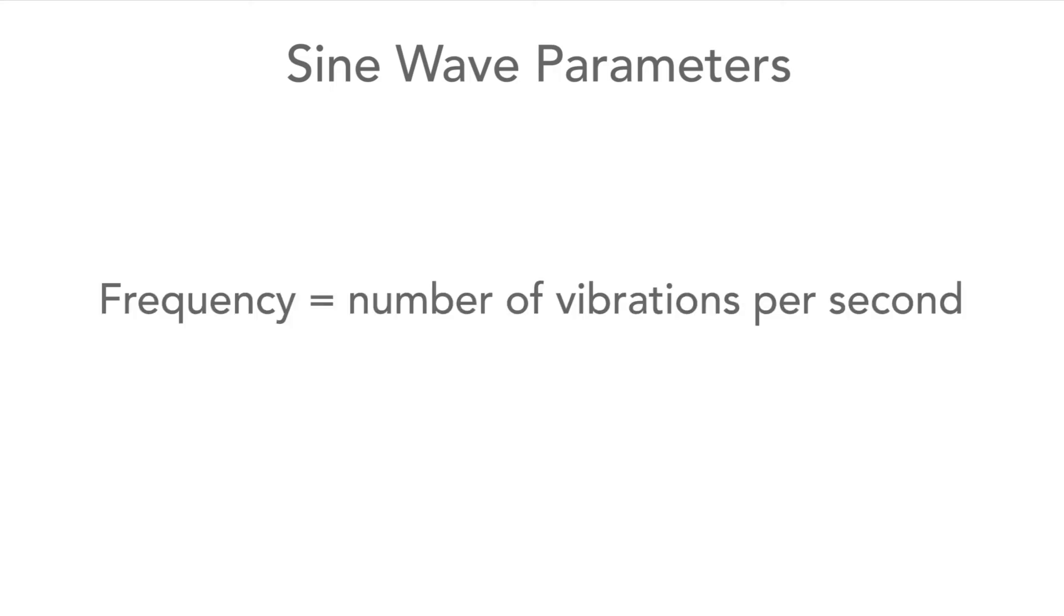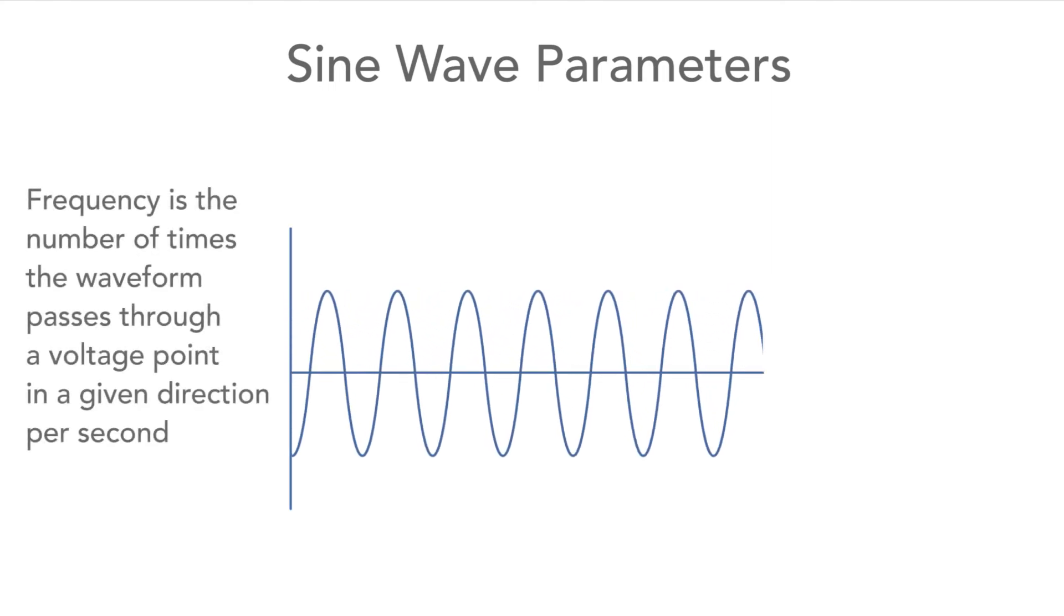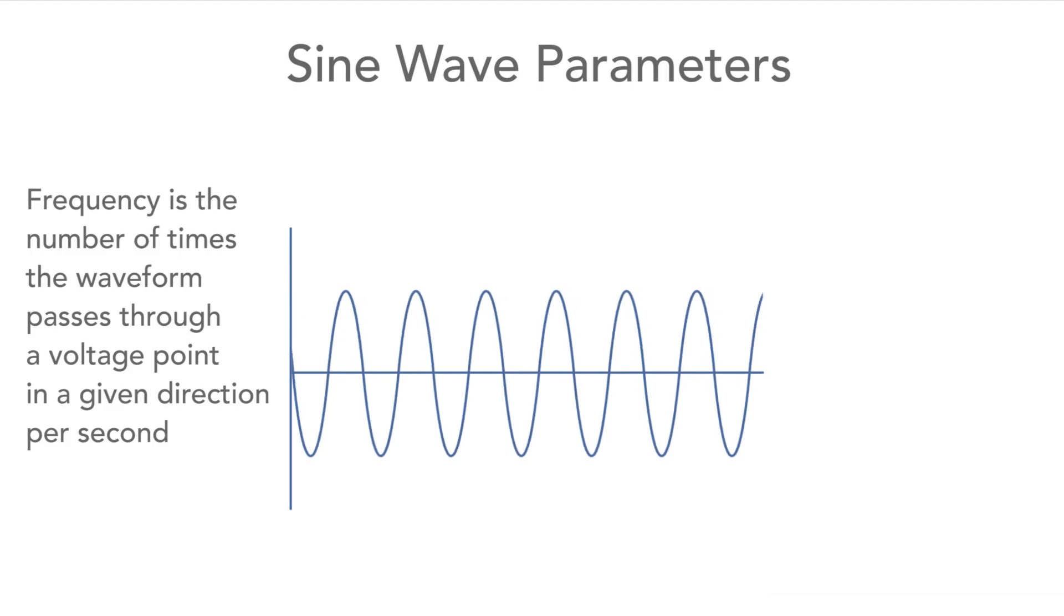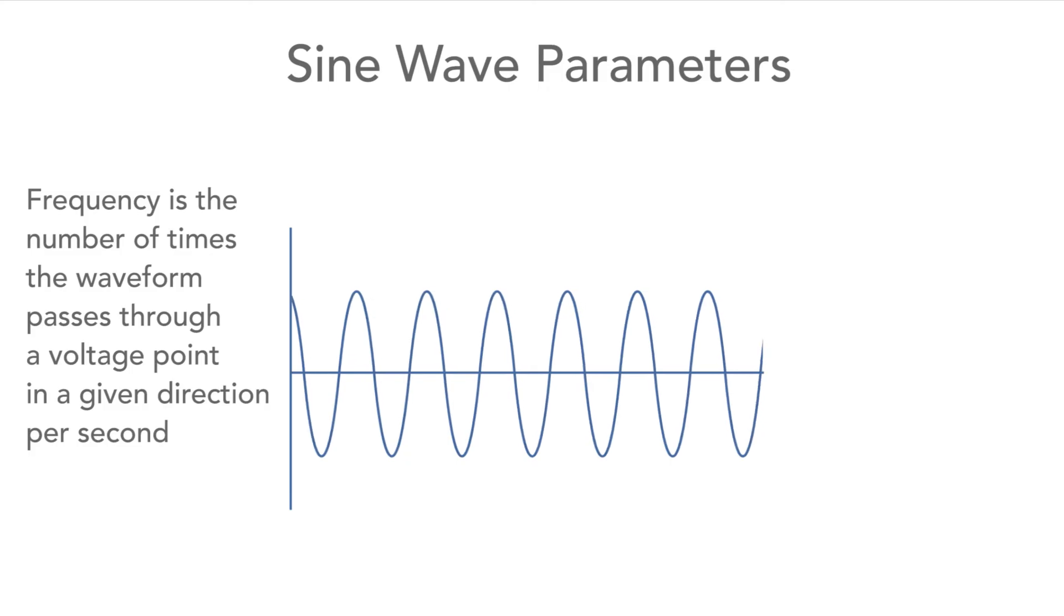The next is the frequency. This is the number of vibrations per second. So it's possible, for example, to measure how many times the waveform passes up or down through the zero volt line in a second, or another voltage could be used.